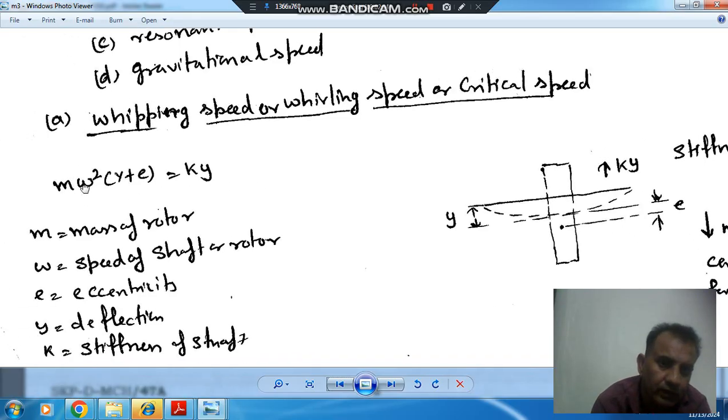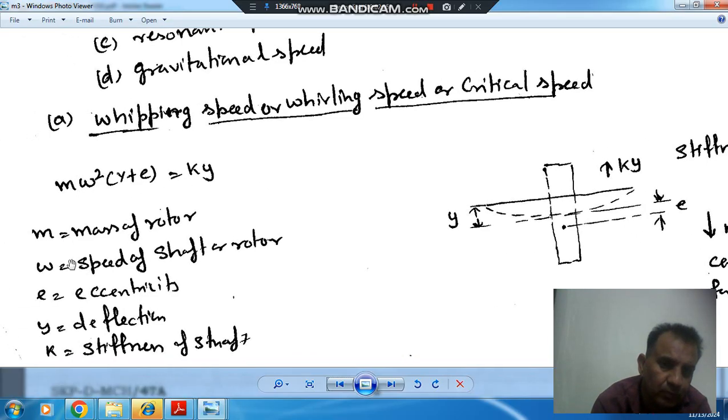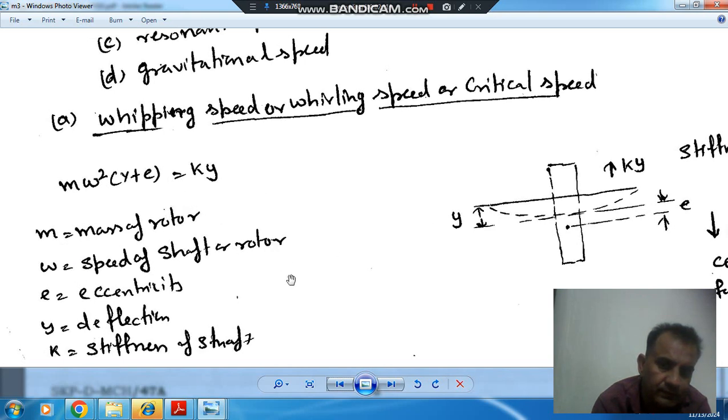Both are equal. Where M is mass of rotor, omega is speed of rotor, Y is the deflection of shaft. This is centrifugal force.